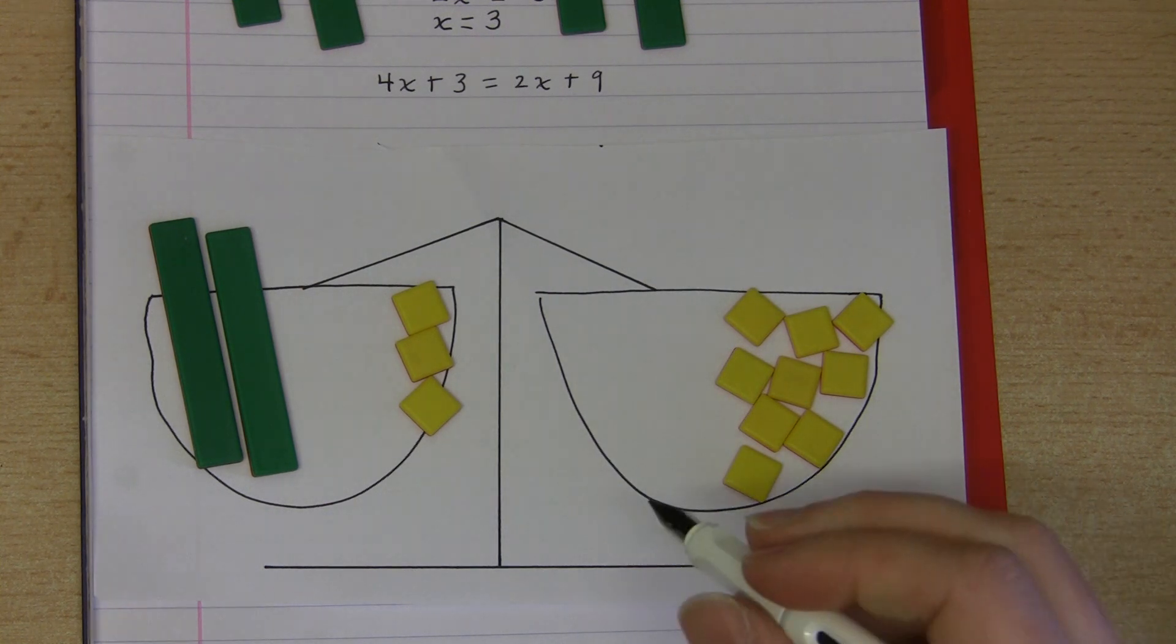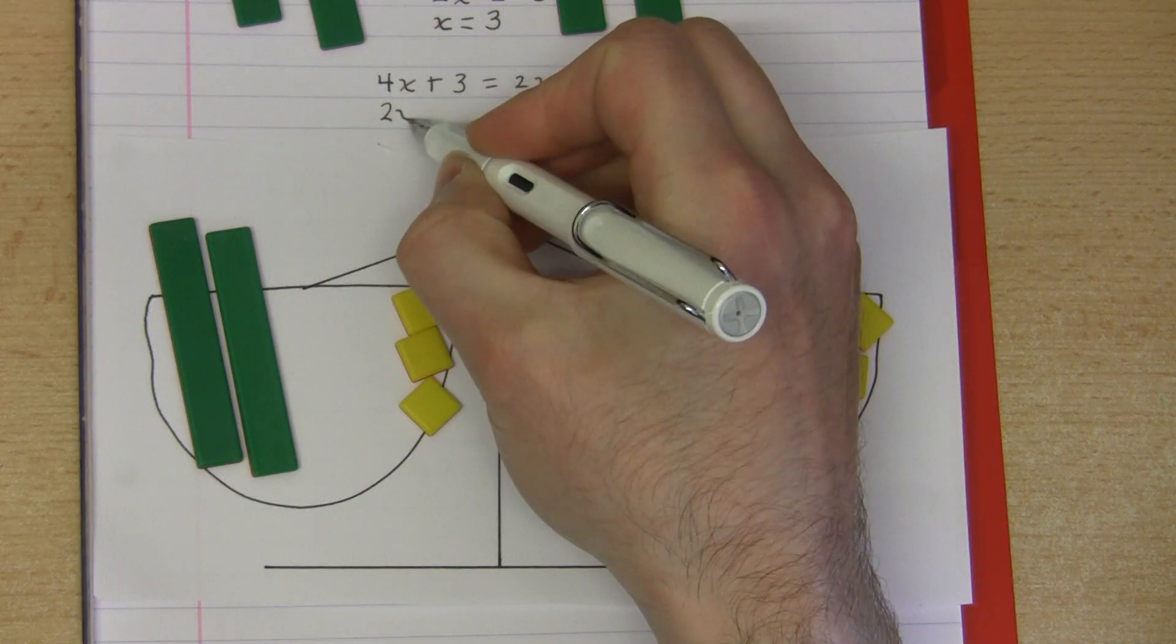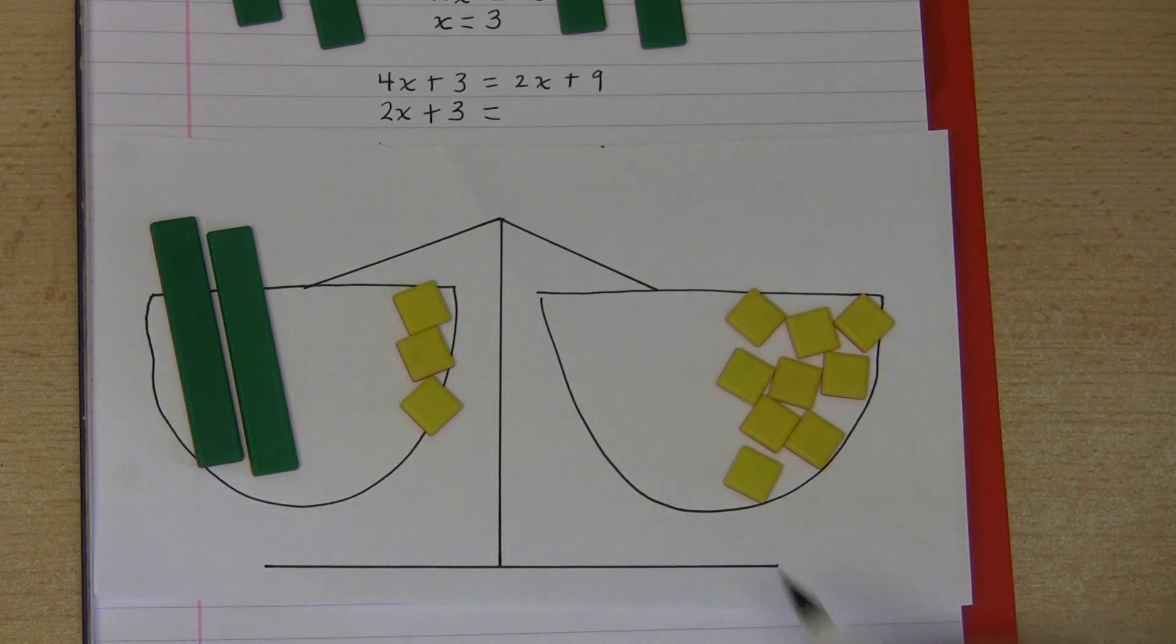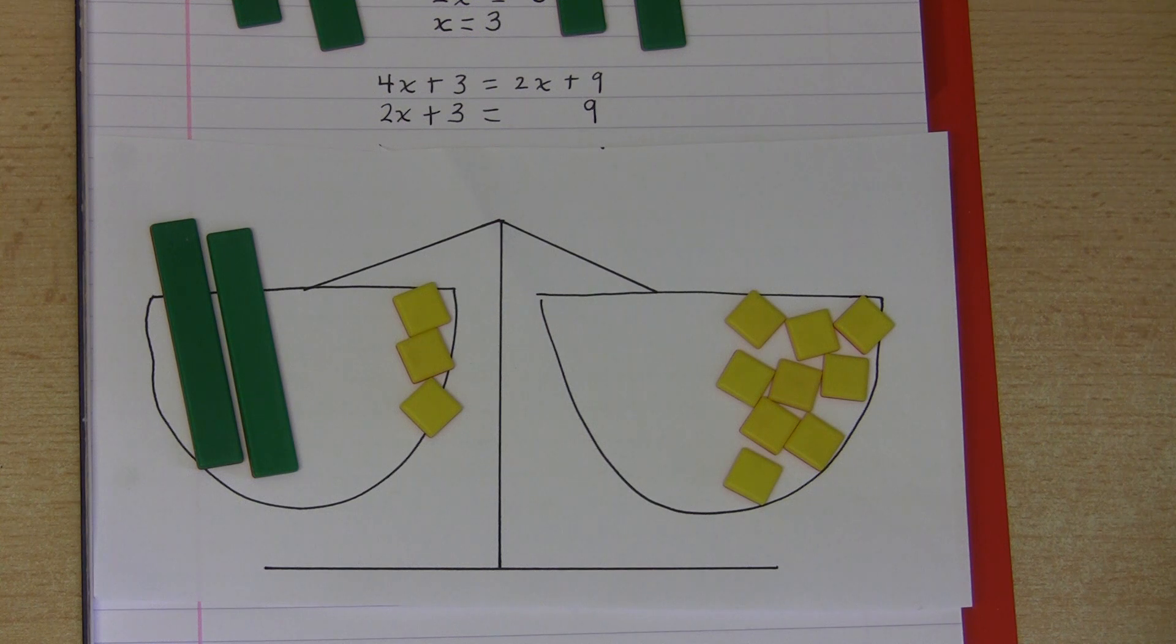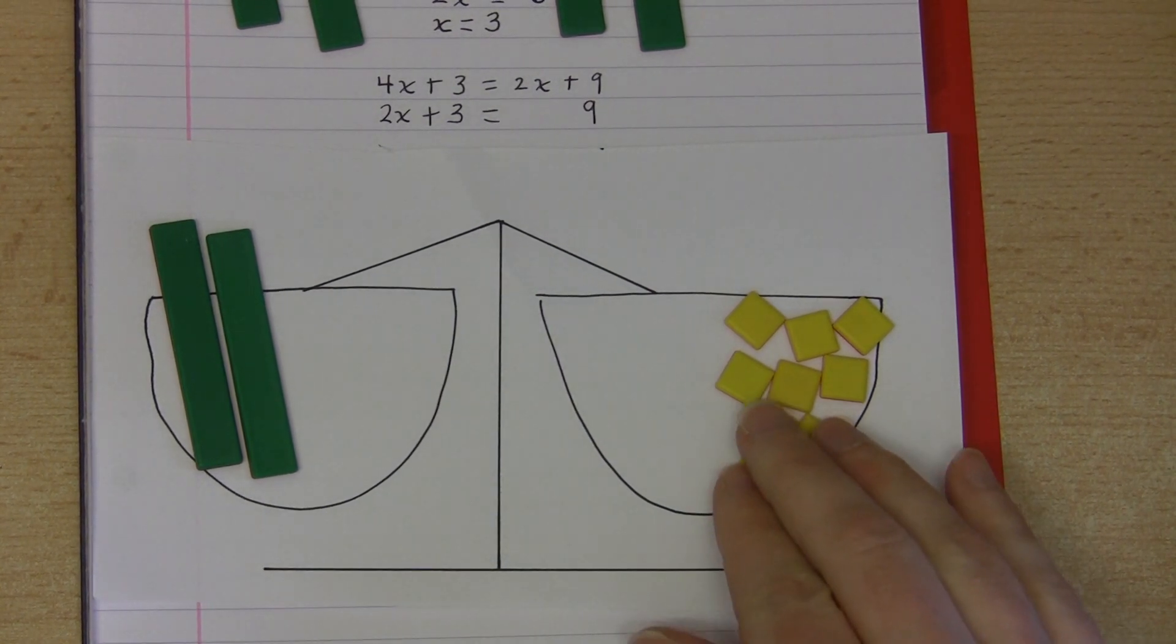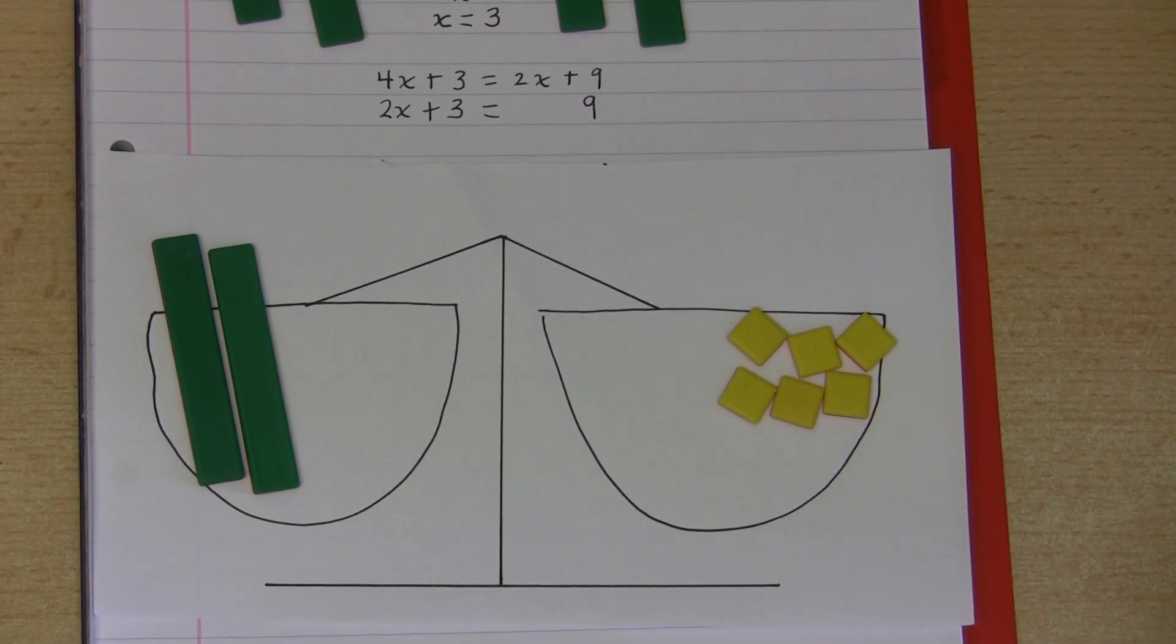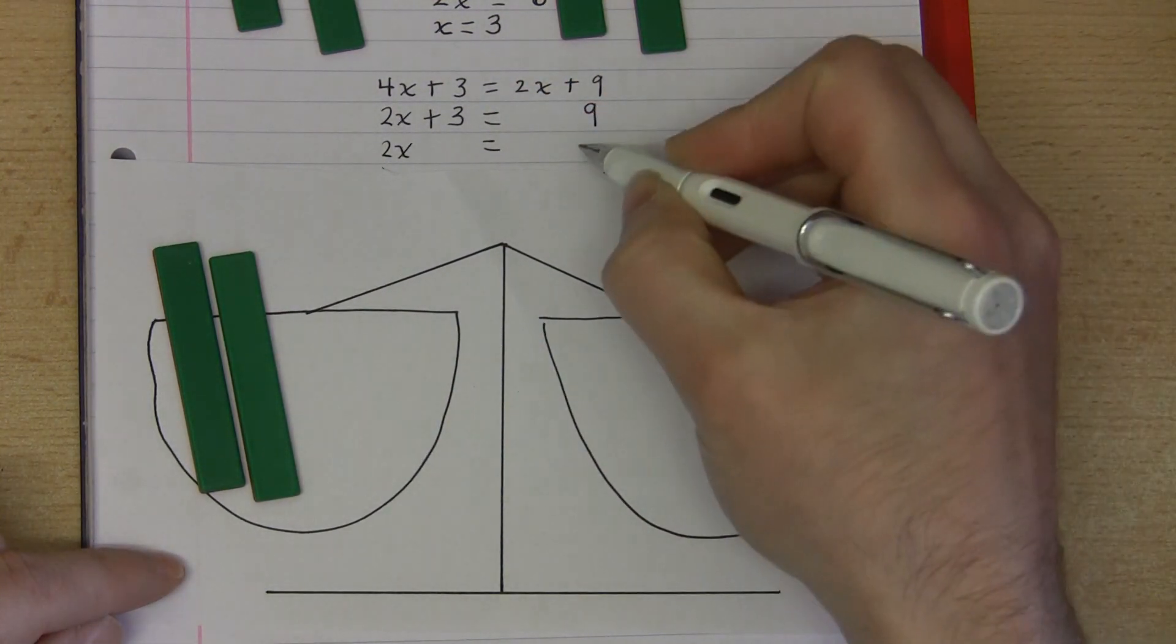What's left in the scales and therefore what I can write down as the equation: on the left hand side I have two green rods so that's 2x. There's also three of these units that are still in the left hand side so that's 2x plus 3. On the right hand side I just have nine units. Then what else could I take out from both sides while still keeping things balanced? Well I could take out three of these counters from the left hand side, and therefore to keep things balanced I must take out three from the right hand side as well. Then what is left and what I can write down as an equation is on the left hand side 2x, two green bars, and on the right hand side I have six units left.